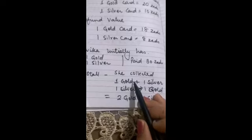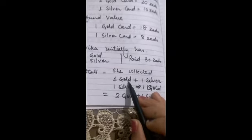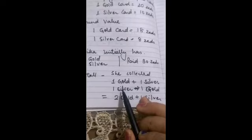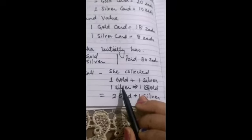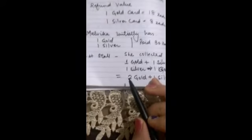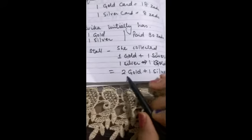Now in the first stall she paid with 1 gold and 1 silver and she won both the games. So for 1 gold she got the gold card back plus reward of 1 silver. When she played with 1 silver card she got 1 gold instead but silver was not returned. Thus at the end of her play, her game at the first stall what she had is 2 gold and 1 silver.